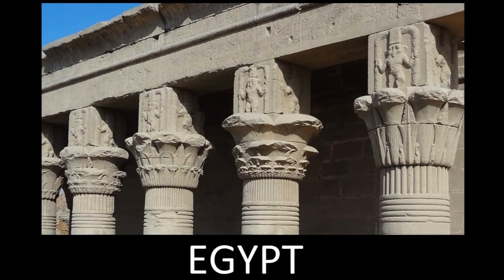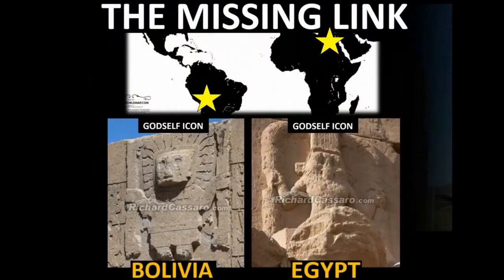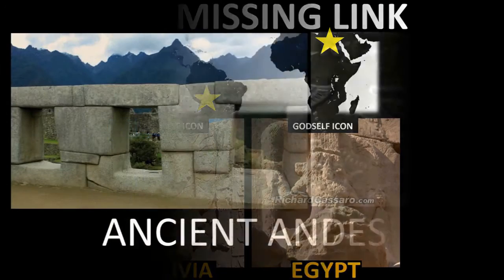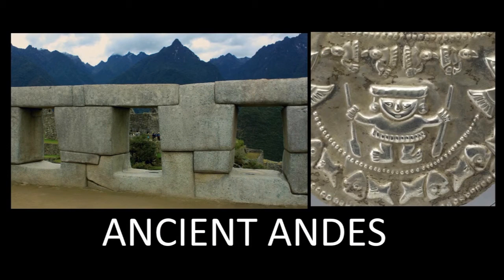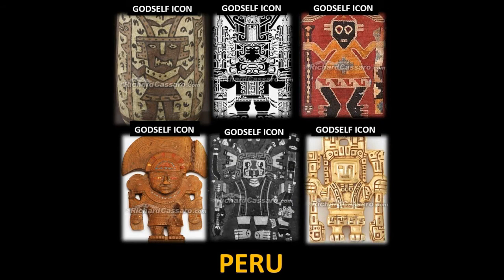One of Egypt's earliest God Self Icons is the powerful god Bes, depicted atop the high columns of a famous Egyptian temple in Dendera. Incredibly, this depiction of Bes is nearly identical to a God Self Icon carved on the Gate of the Sun in Tiahuanaco, Bolivia — halfway around the world. There, the creator god Viracocha of the Andes strikes the same God Self pose as Bes. The God Self Icon was the main religious symbol for the Inca and pre-Inca stonemasons across the ancient Andes, including the Chachapoyas, Chancay, Chavin, Chimu, Inca, Moche, Nazca, Paracas, Sican-Lambayeque, Tiahuanaco, and Wari.